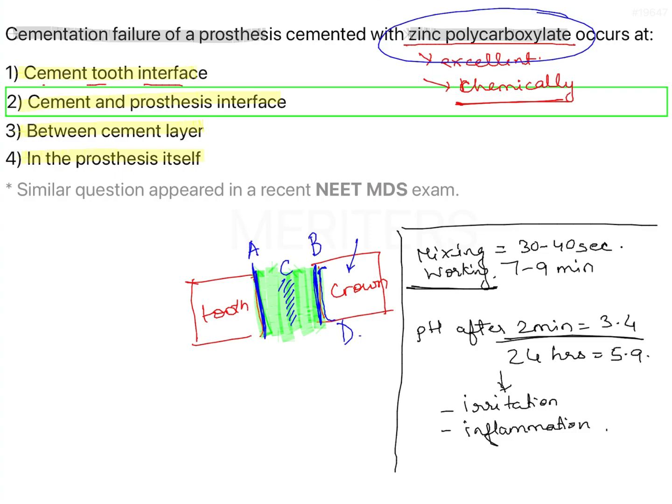So cementation failure of a prosthesis cemented with zinc polycarboxylate will occur at the cement and prosthesis interface — option two.